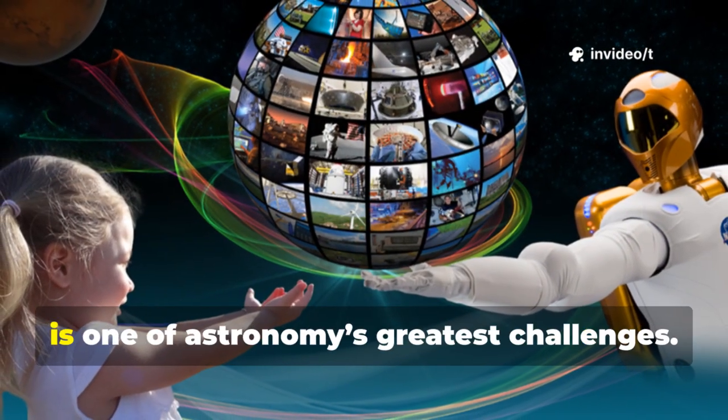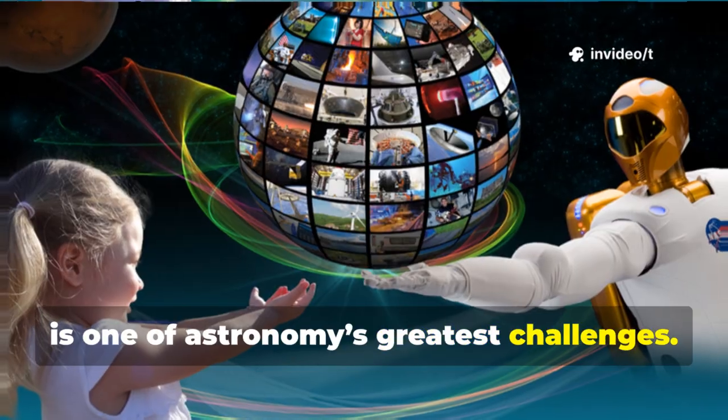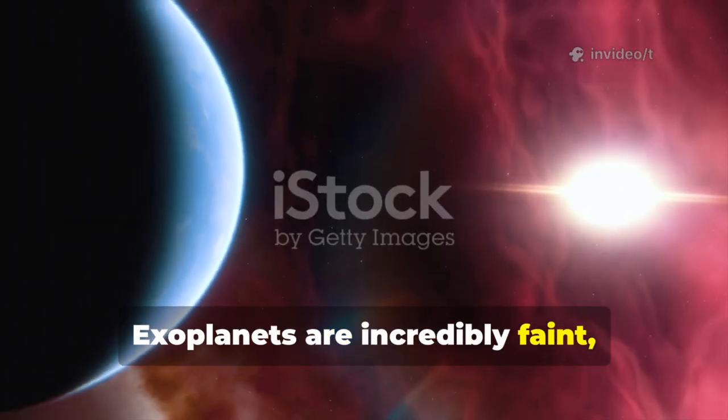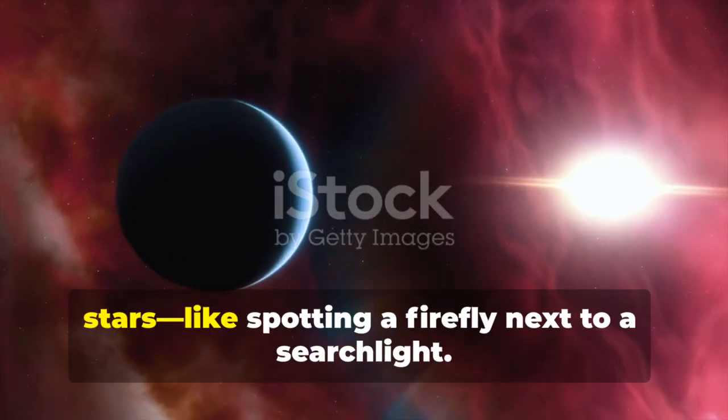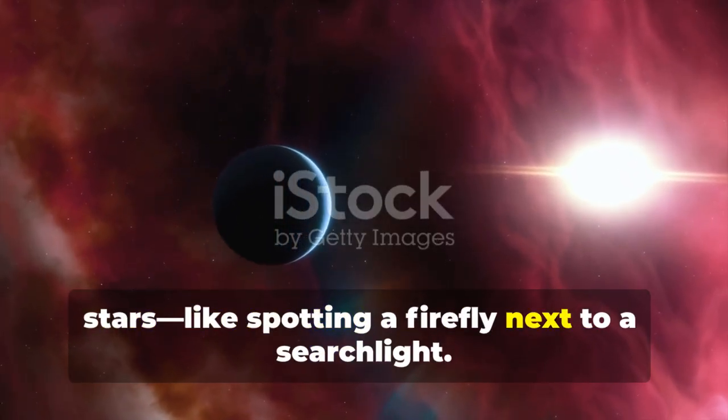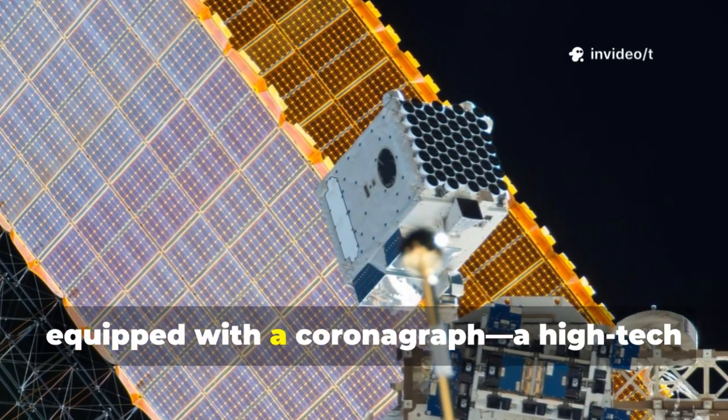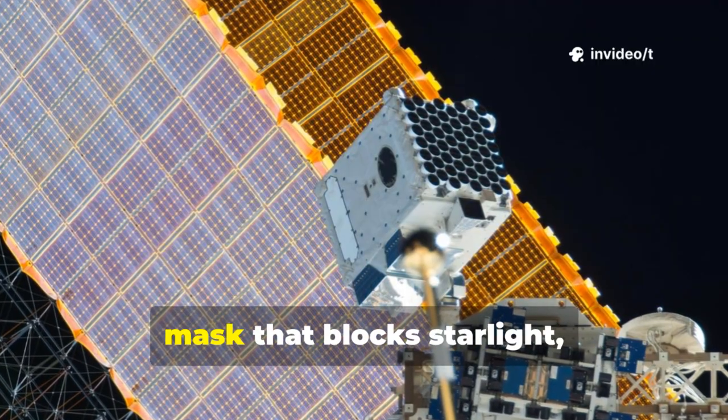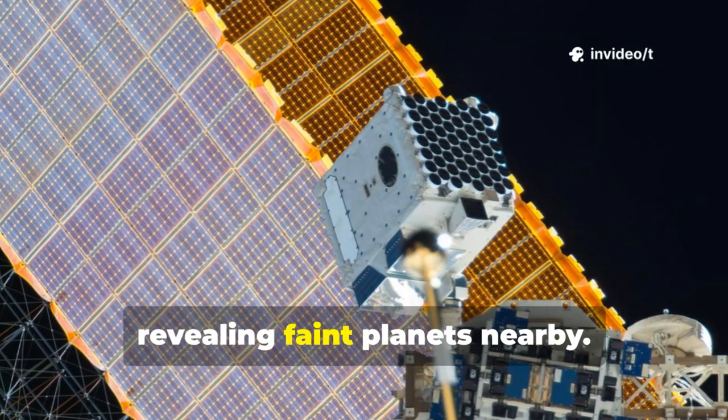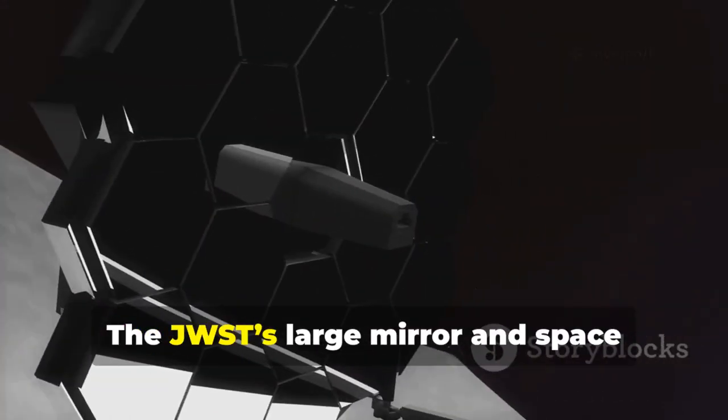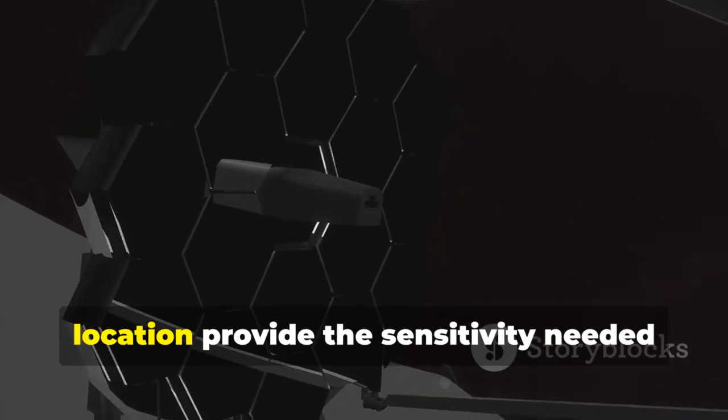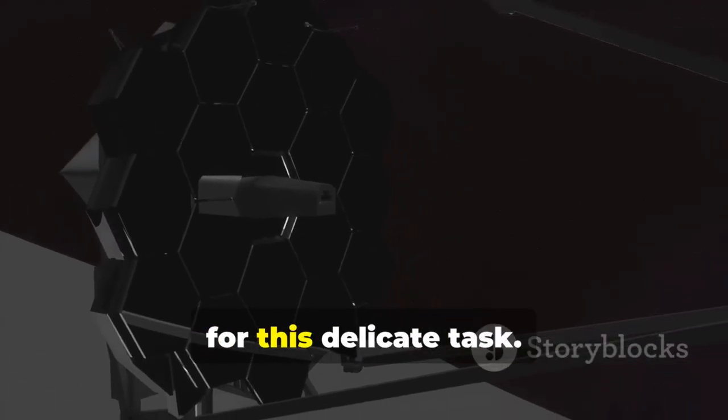Capturing a direct image of an exoplanet is one of astronomy's greatest challenges. Exoplanets are incredibly faint, lost in the glare of their host stars, like spotting a firefly next to a searchlight. NASA overcame this with the James Webb Space Telescope, equipped with a coronagraph, a high-tech mask that blocks starlight, revealing faint planets nearby. The JWST's large mirror and space location provide the sensitivity needed for this delicate task.